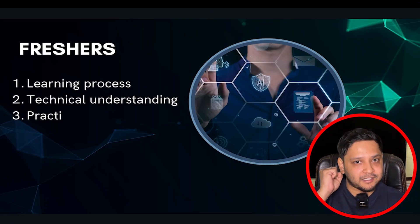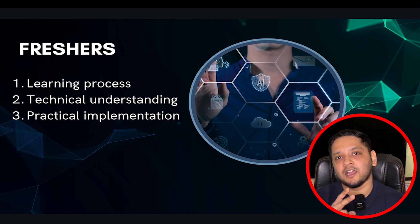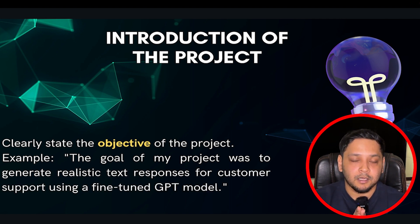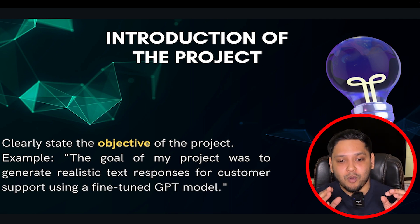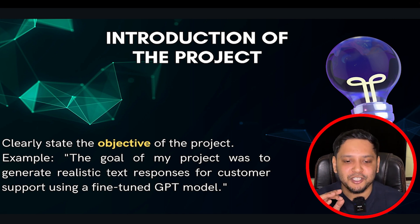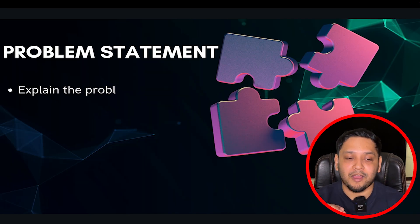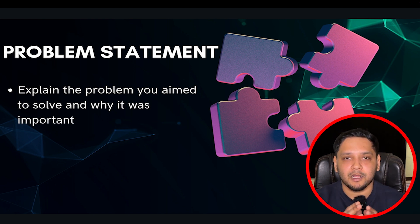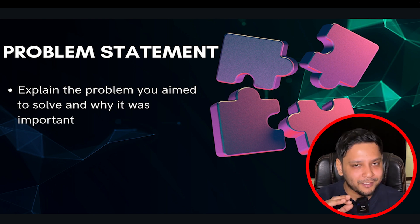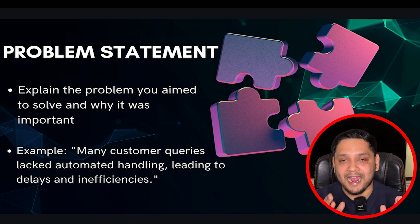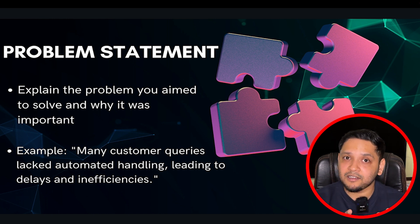If you are a fresher, your answer should reflect: first, the learning process; second, the technical understanding; and third, the practical implementation. First, clearly state the objective of your project. For example: the goal of my project was to generate realistic text responses for customer support using a fine-tuned GPT model. Second, explain the problem statement you aim to solve — for example, many customer queries lacked automated handling, leading to delays and inefficiency.